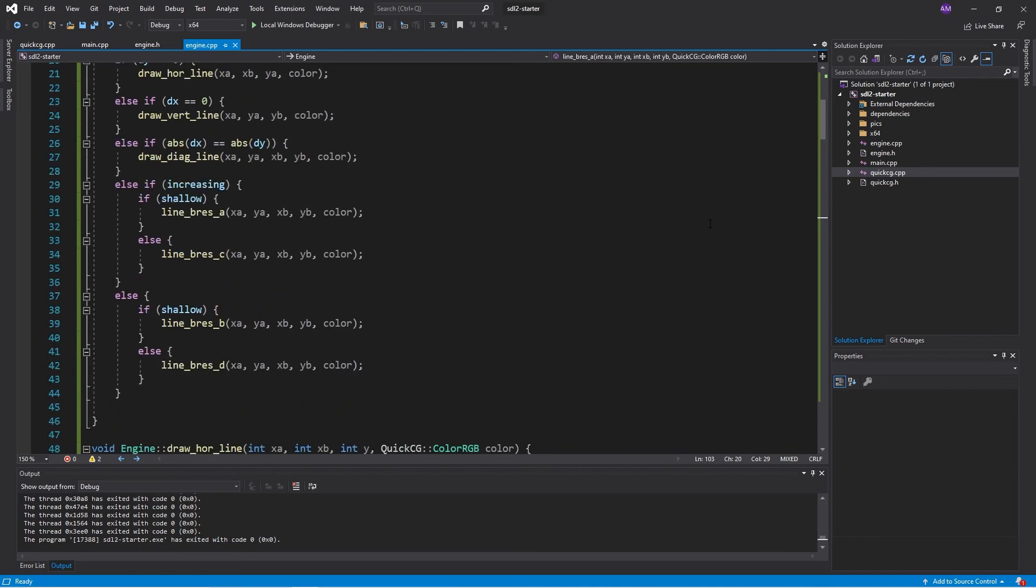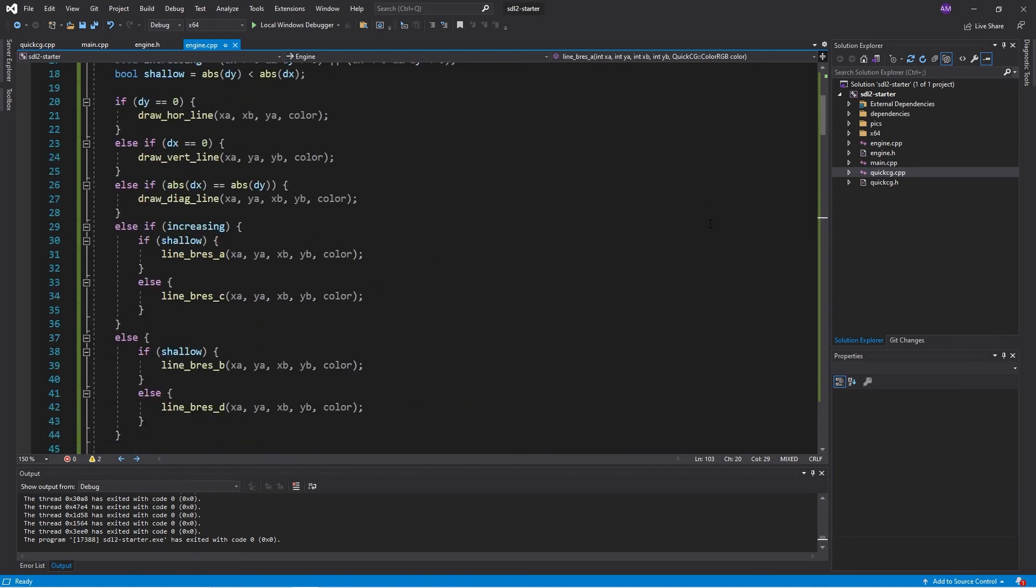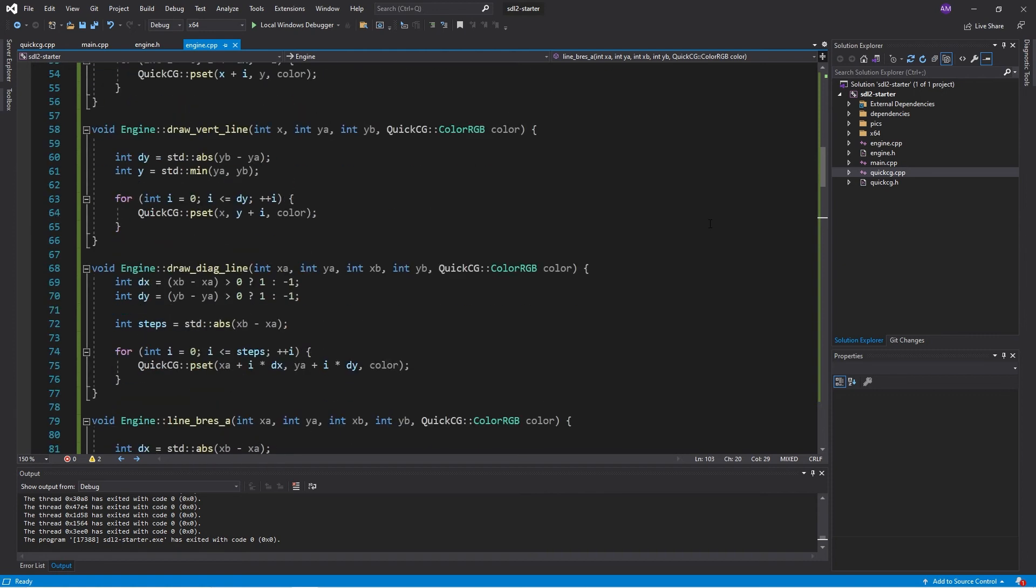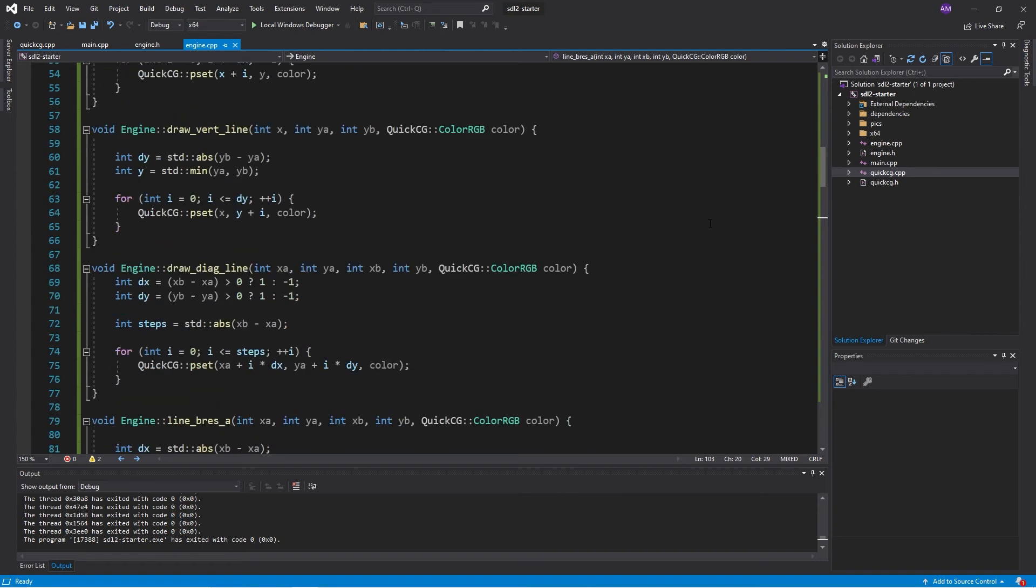Another case is if dx and dy are equal to each other in sign. Well, then we have a diagonal line and we can increment x and y by the same amount each time. Those were the easy cases.